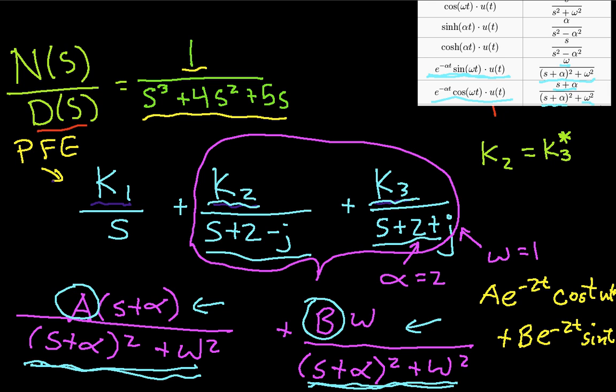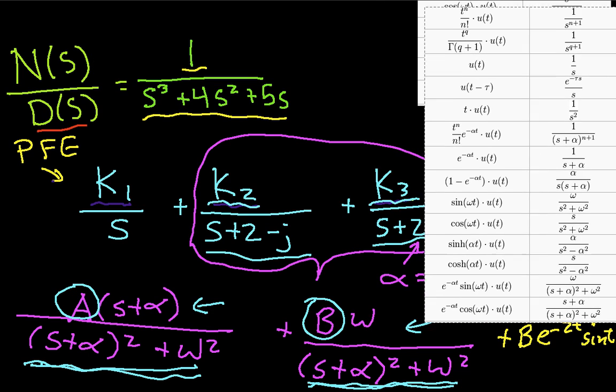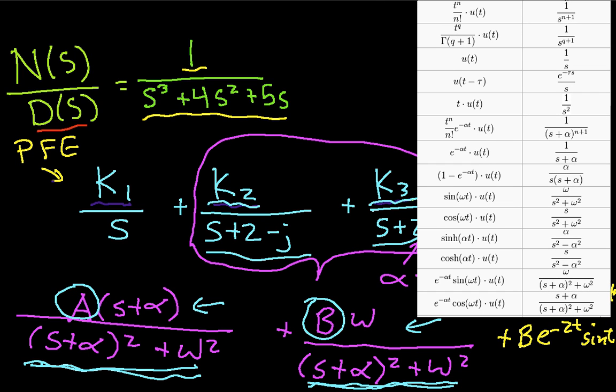Now, it turns out there's only two possible kinds of roots. There's real roots, which we know how to handle because they look like this if the root is 0, or they look like this if the root is non-zero. And there's complex roots. And we found that the complex roots, we can turn into something that looks like a sine and a cosine. You'll recall from your algebra that is the only two possible kinds of roots you can get from a polynomial. They'll either be real or they'll be complex.